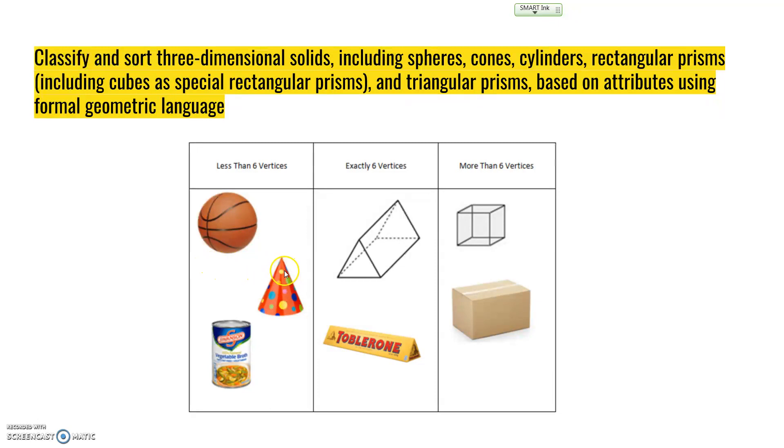This cone, like a birthday hat, has one circular face and a curved surface. So it has no vertices and no edges—well, it has one face, a circular face. And a cylinder has two circular faces and one curved surface.